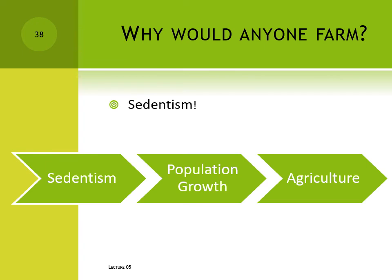So why would anyone ever become a farmer? It's all related to sedentism. Being a nomadic hunter-gatherer strictly limits human populations, even when there's plenty of food available in the natural environment. These biological constraints are lifted, however, when humans become sedentary and stop moving around so much. So once people become sedentary, population densities begin to rise, and this rise in population density sets in motion a sequence of events that ends in agriculture.